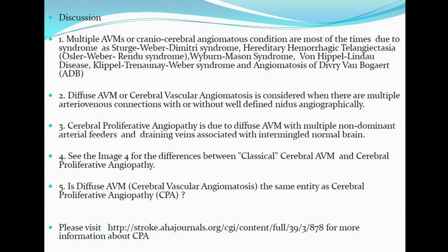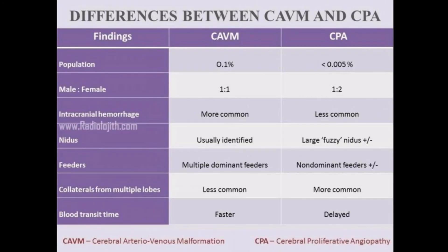When there are multiple arteriovenous connections due to multiple dominant arterial feeders and draining veins with or without a well-defined nidus angiographically, then we can call it diffuse AVM or cerebral vascular angiomatosis.